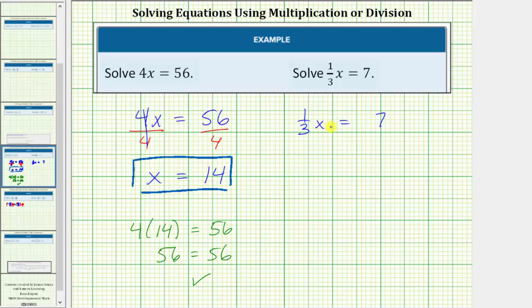So we're probably thinking, in order to isolate x, we need to divide both sides of the equation by 1 third, which is true, but remember, instead of dividing by a fraction, we normally multiply by the reciprocal. And since the reciprocal of 1 third is 3 over 1 or 3, let's isolate the variable by multiplying both sides of the equation by 3.